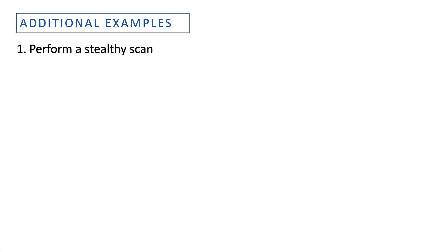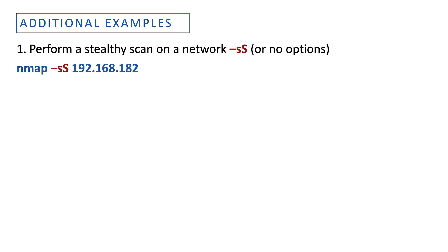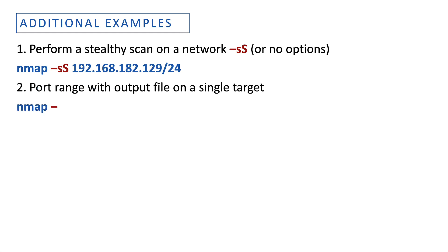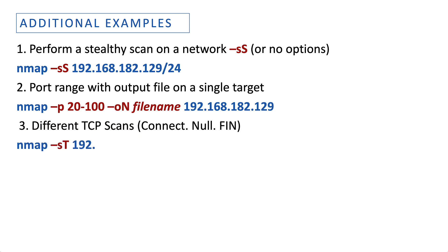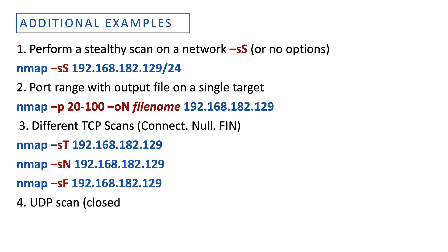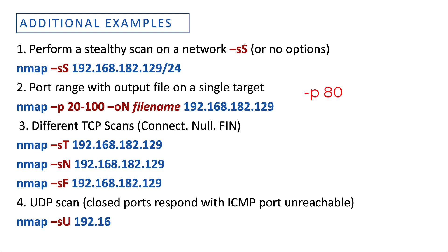These are additional examples you might want to try. The -sS, or stealthy SYN scan, performs a TCP scan but does not complete the three-way handshake. In the second example, we use the -p option to specify ports: you can specify a single port like 80, multiple ports separated by a comma, or a range separated by a hyphen. For a deep scan you would use 0-65535.